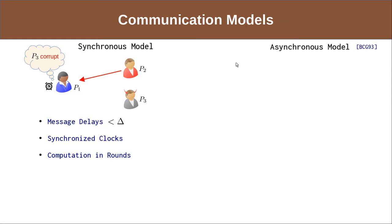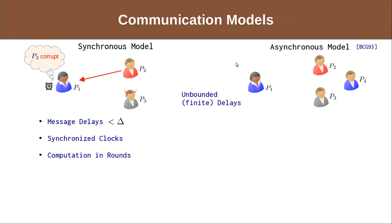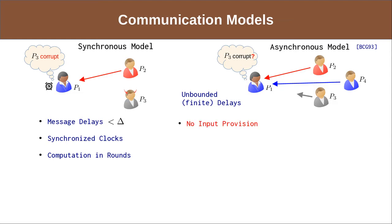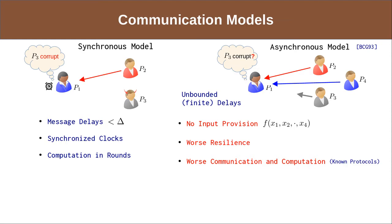In the asynchronous model, there is no such upper bound on the message delays. The only guarantee is that the messages of honest senders are eventually delivered. As a result, if a party does not receive an anticipated message, it cannot be sure if the party is corrupt and never sent a message, or if the message was delayed. Asynchronous protocols do not have input provision and have worse resilience and communication complexities compared to synchronous protocols. However, they model real-world networks like the internet better and are inherently responsive, working at the network speed.